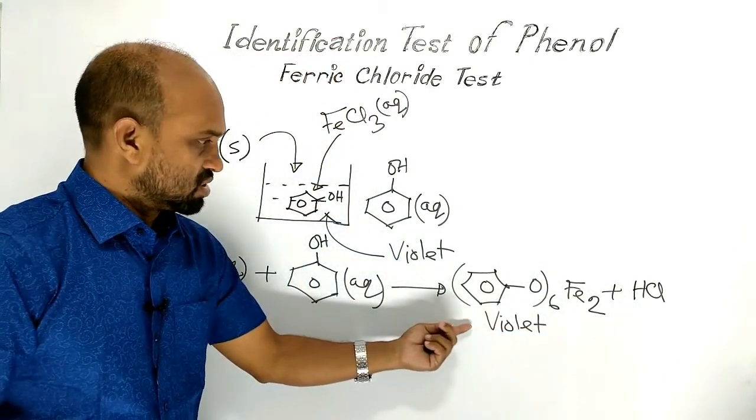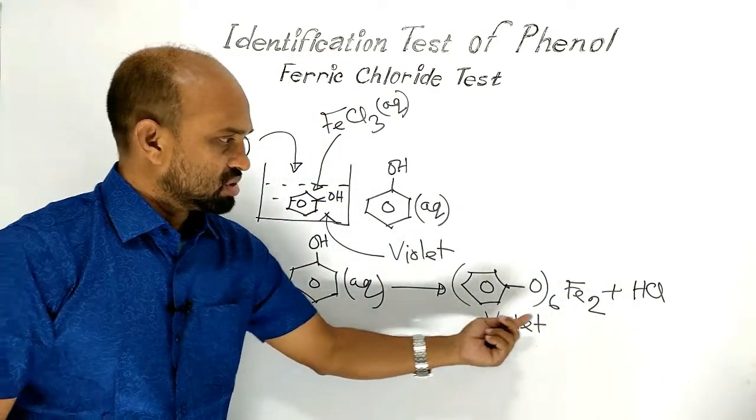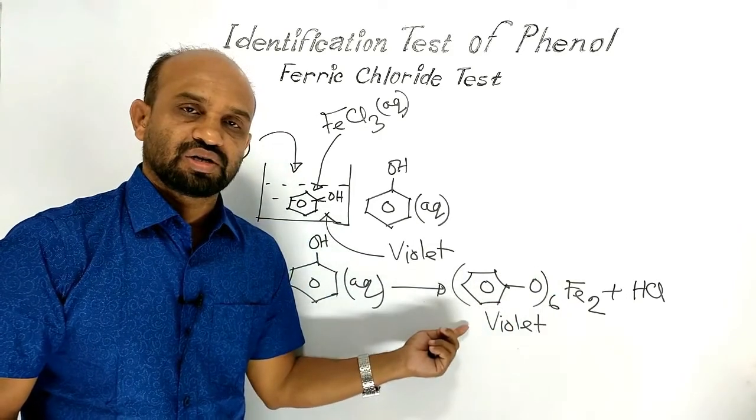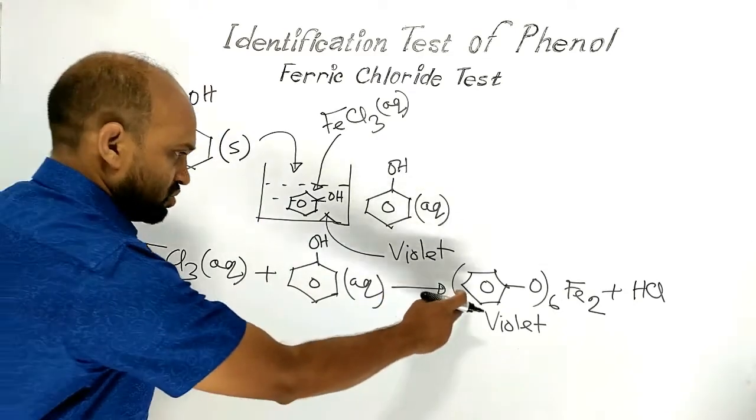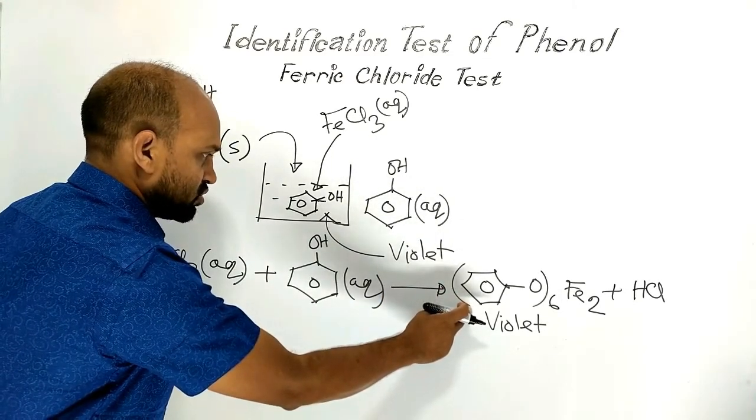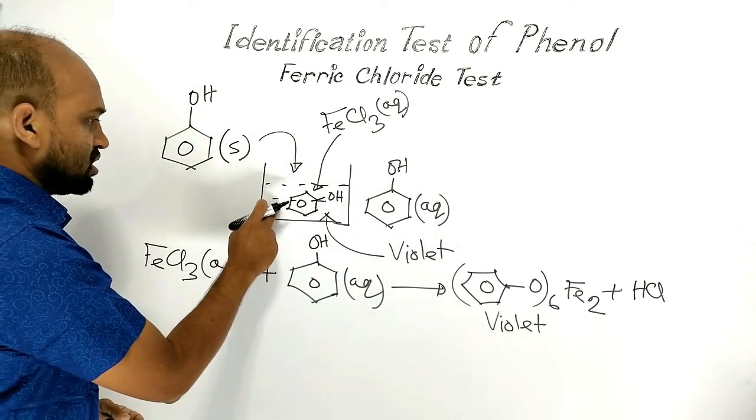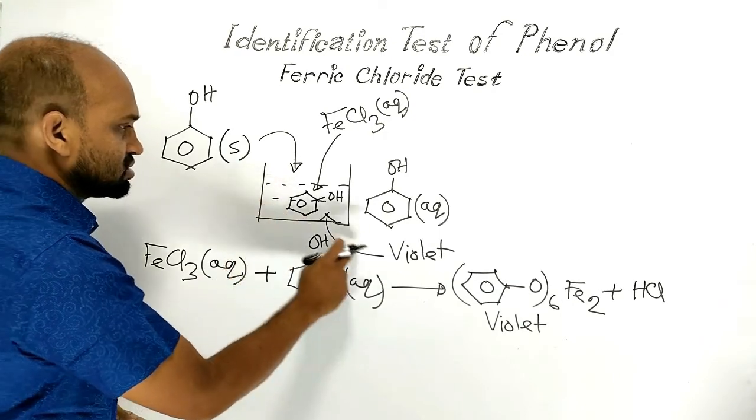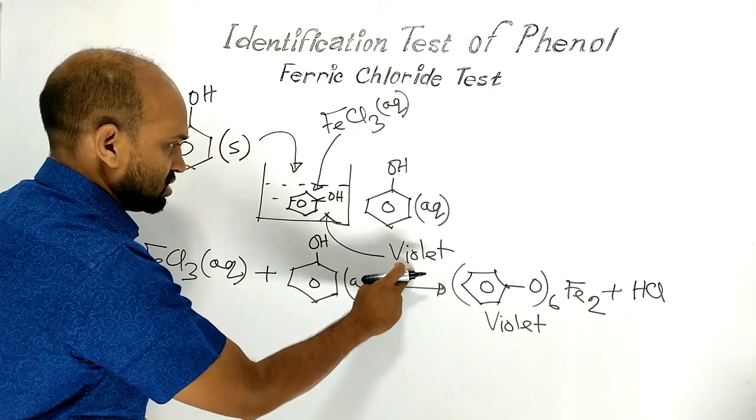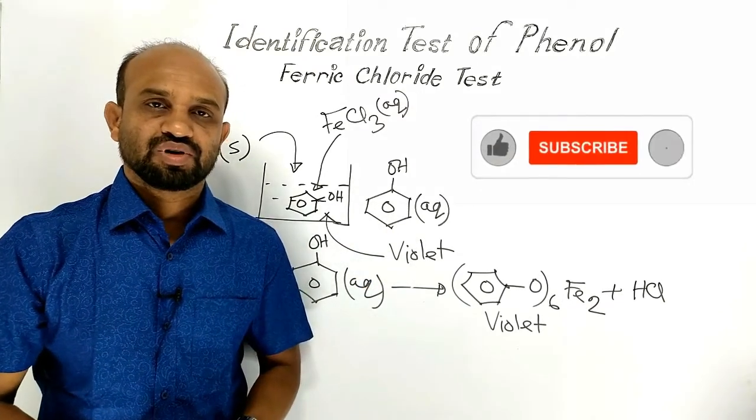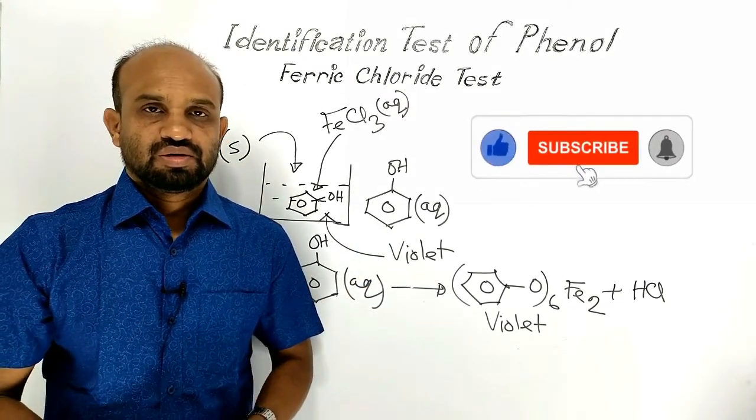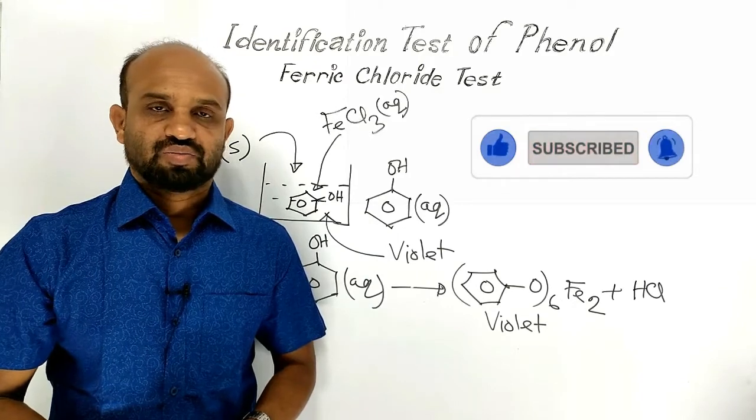So a complex compound diiferric hexaphenate is formed which is violet in color. Because of the presence of this compound, the colorless solution of phenol turns violet in color. This violet color proves the presence of phenol in the solution. This is the ferric chloride test of phenol.